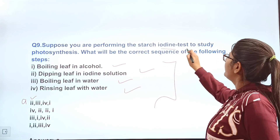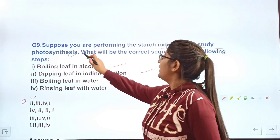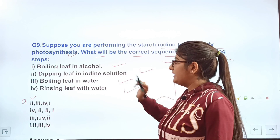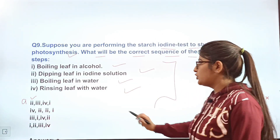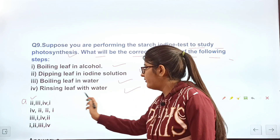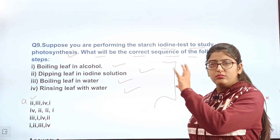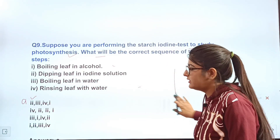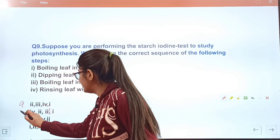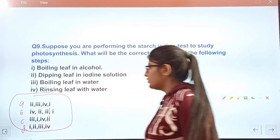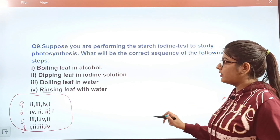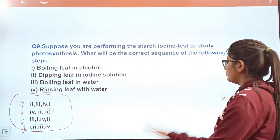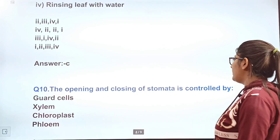Question 9: You are performing the starch-iodine test to study photosynthesis. What will be the correct sequence of steps? Steps given: A — boiling leaf in alcohol, B — dipping leaf in iodine solution, C — boiling leaf in water, D — rinsing leaf with water. Write down the correct sequence on the side, find it in the options, and tell in the comments.